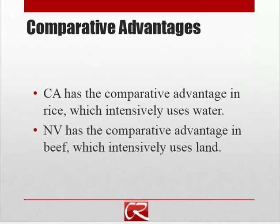The idea then is that each country or region will have comparative advantage in the good that plays to its strengths, or at least doesn't play to its weakness. Although Nevada has less of each resource, it's less crippled when it comes to land, so it should specialize in beef, where its shortage of water is less of a hindrance. California, although it has more water and more land, has its biggest advantage in water, so it should produce rice, which plays to its biggest strength. That's the idea of the Heckscher-Ohlin model — comparative factor abundance and the factor intensity of different goods dictates which goods are produced where.